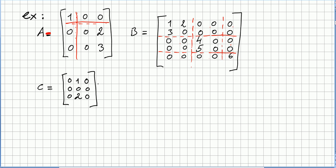If we are asked to block-diagonalize matrix C with as many diagonal blocks as possible, you look at it and immediately see that this is a three by three matrix, and it is already a block diagonal matrix. So no further partitioning is possible here. It is also possible to get an example where you cannot partition any further a given matrix.